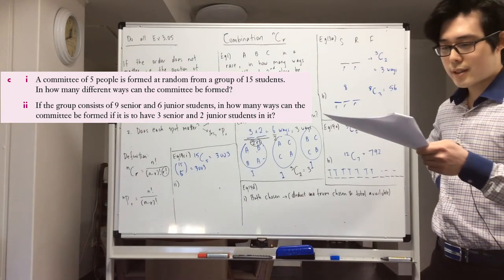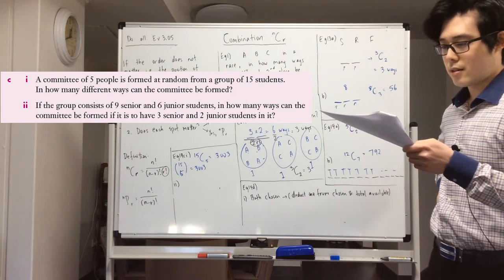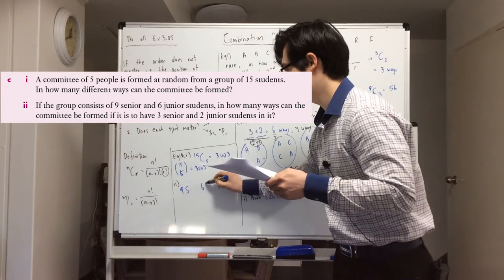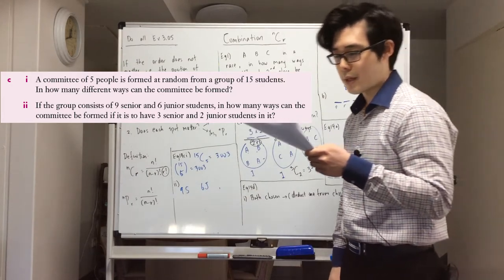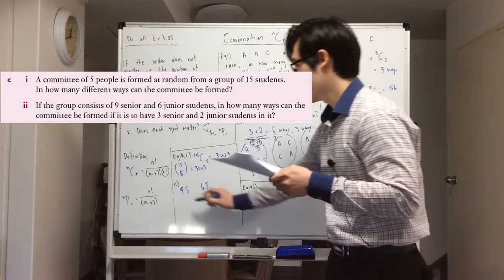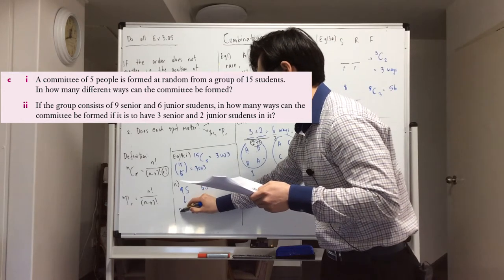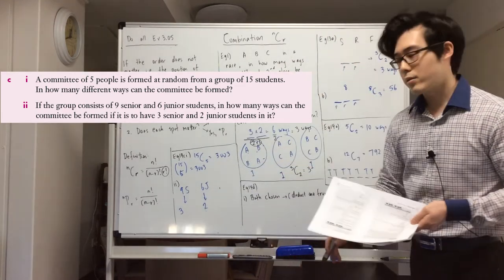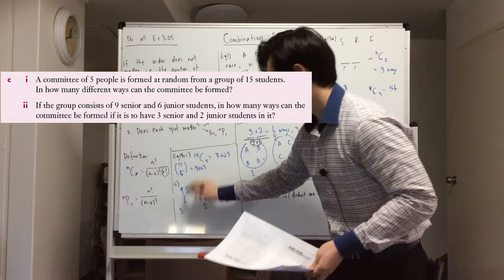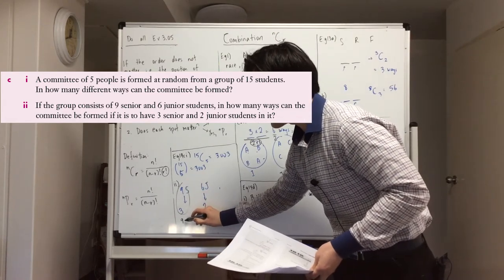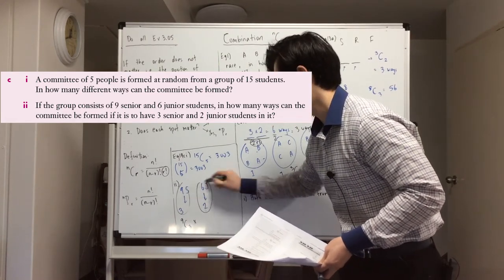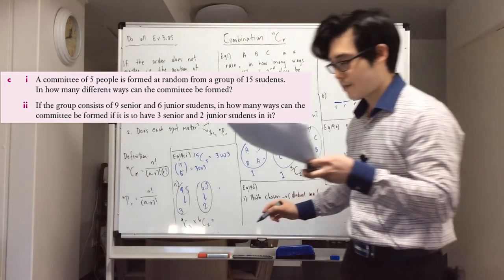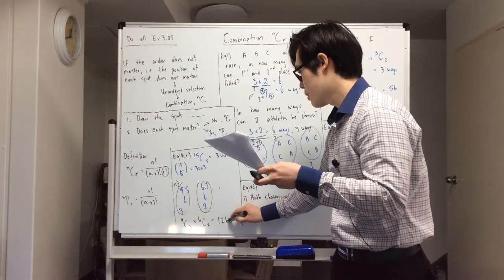Now if the group consists of nine senior and six junior students, in how many ways can the committee be formed if it is to have three seniors and two juniors? Because we've got two separate categories, we work them out separately. From the nine seniors, choose three: that's 9C3. Then multiply by 6C2 for the two juniors. If you've got different categories, do it separately and multiply them together.